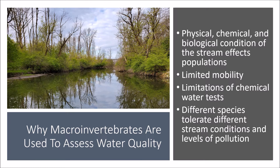Macroinvertebrates have been used as biological indicators of stream quality for decades by researchers. They're affected by the physical, chemical, and biological conditions of the stream. Unlike fish, macroinvertebrates have limited mobility and are unable to escape pollution. Their limited mobility also makes them easy to catch and they are relatively easy to identify. Chemical water tests are limited because they only tell us what's in the water at that specific moment the sample is collected — they do not provide information on what was in the water an hour ago, yesterday, or last week. If pollutants were present in the past, the quantity and diversity of macroinvertebrates present would reflect those pollution events.